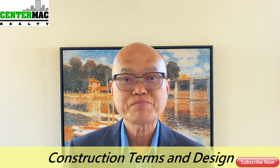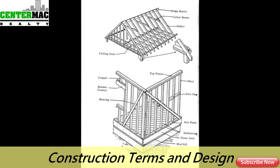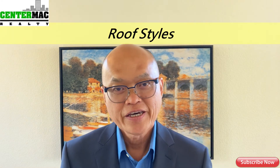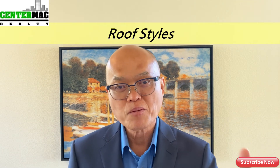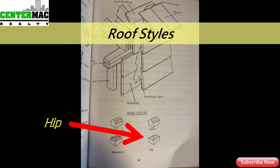Looking further down on the same page, you will see the shape of the roof. The wood planks that run diagonally from the ridge — which is the top part of the roof — to the base of the roof are known as rafters. In the DRE exam, you're constantly tested on roof style. One of the most common roof styles is called the hip, which is very easy to recognize because it has four sides and slopes on all four sides.